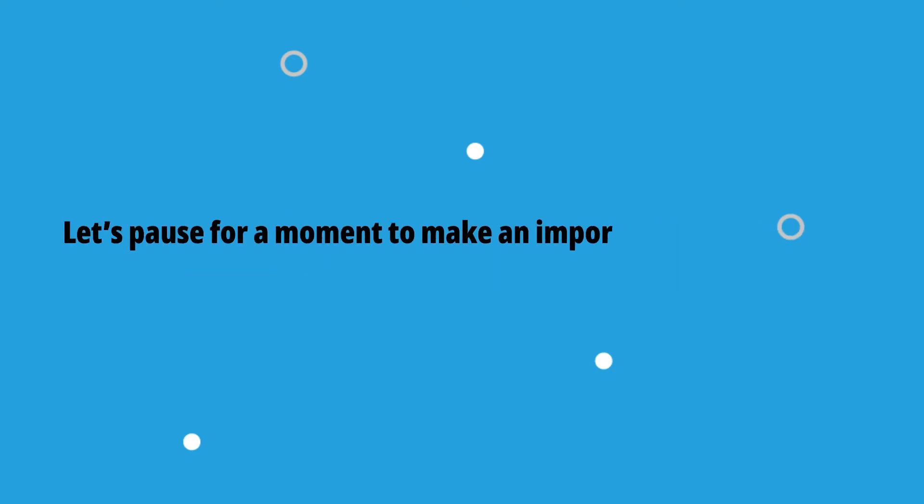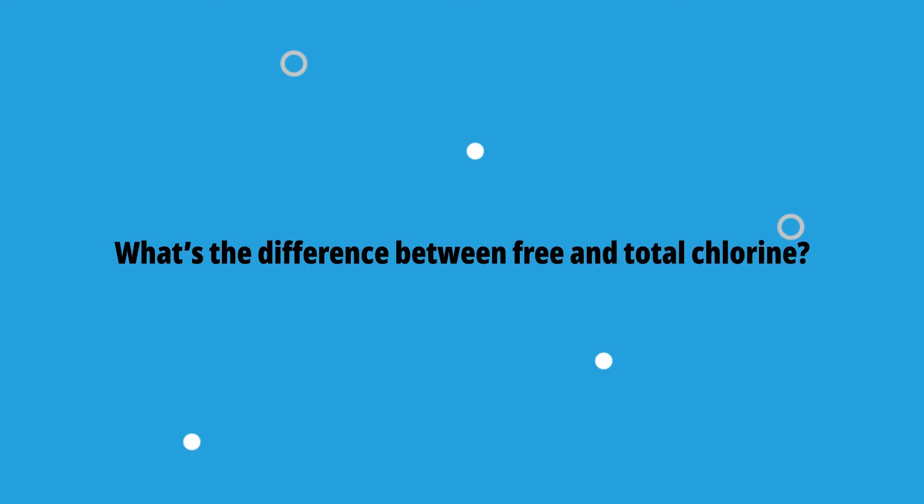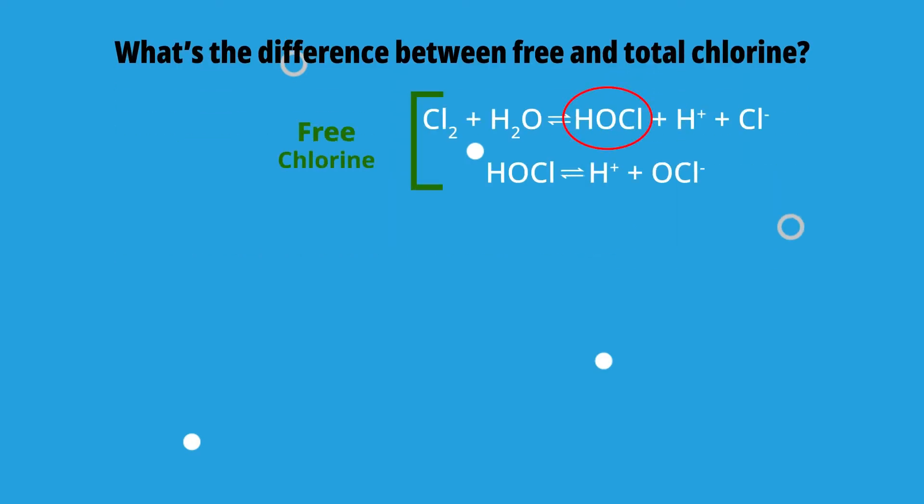Let's pause for a moment to make an important differentiation. What's the difference between free and total chlorine? Free chlorine refers to both hypochlorous acid and the hypochlorite ion, or bleach, and as the form of chemical commonly added to water systems for disinfection.